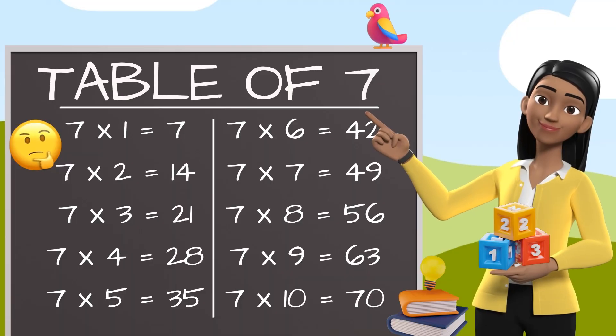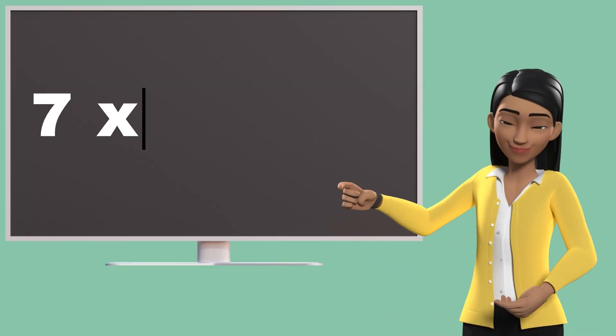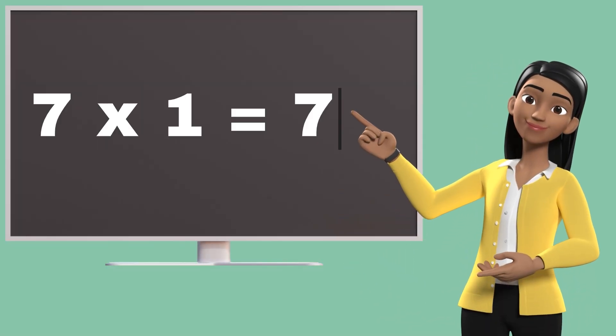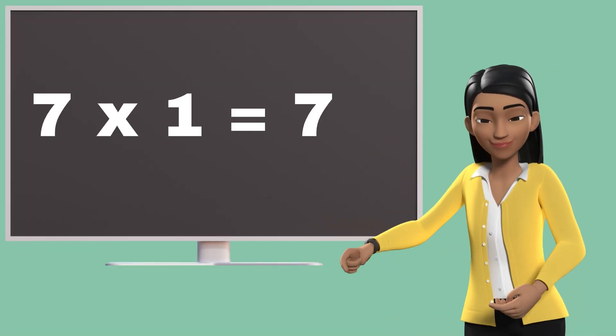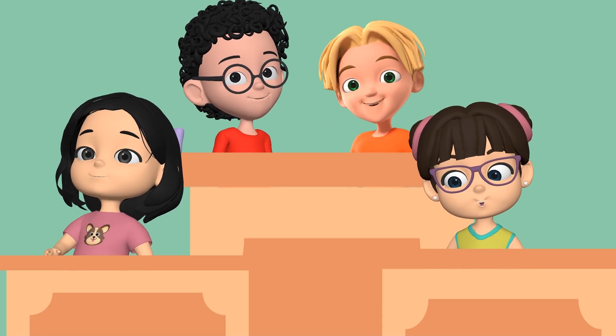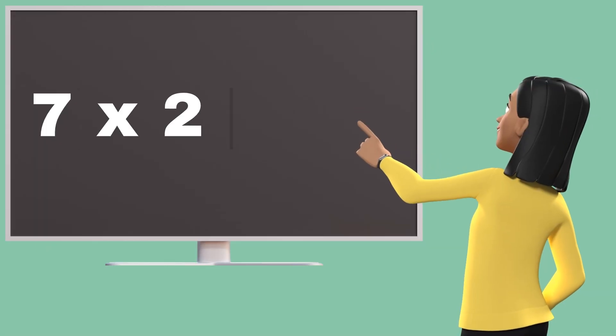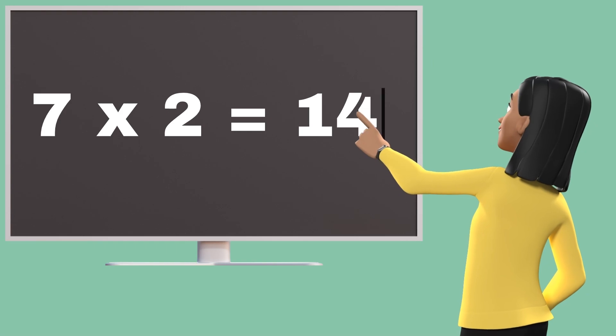Table of seven. Seven ones are seven. Seven ones are seven. Seven twos are fourteen.